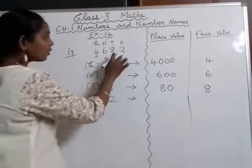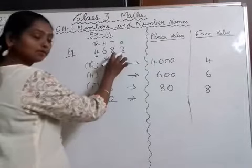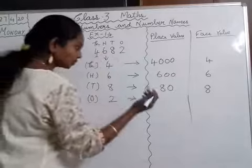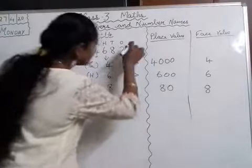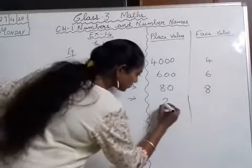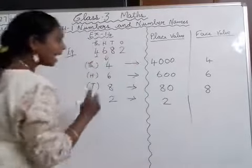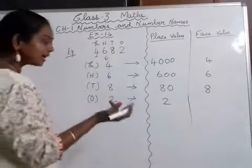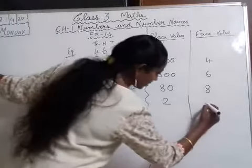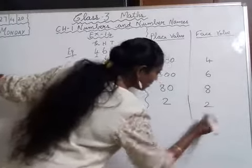And the face value of 8 will be 8. Next, the place value of 2 will be 2 because it is in the ones place, and the face value of 2 will also be the same — 2.